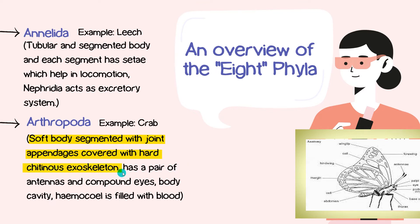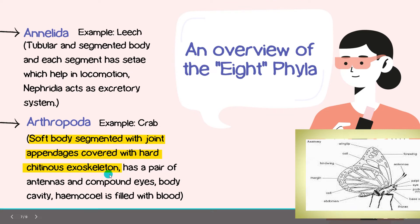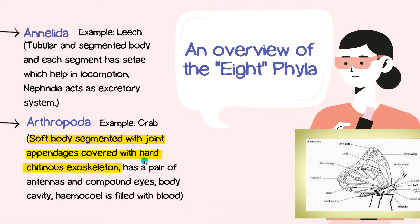The main characteristics: soft bodies, segmented, with joint appendages covered with chitin. Appendages include antenna, wings — cockroaches have wings — so all these are called appendages. A soft body with joint appendages covered with chitin material, which is an exoskeleton, which provides protection.